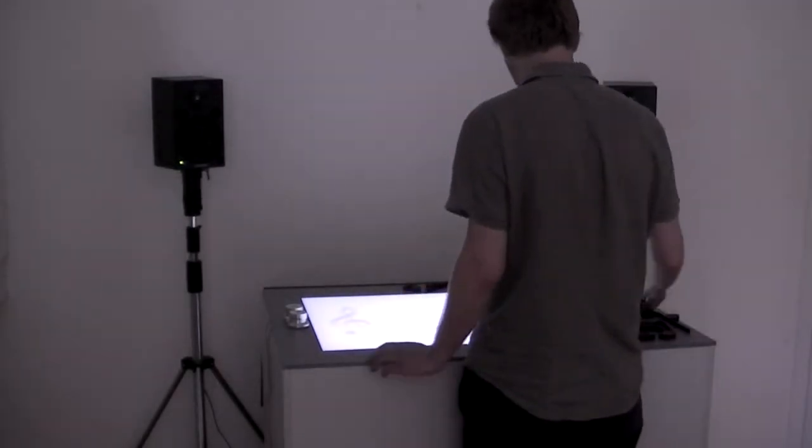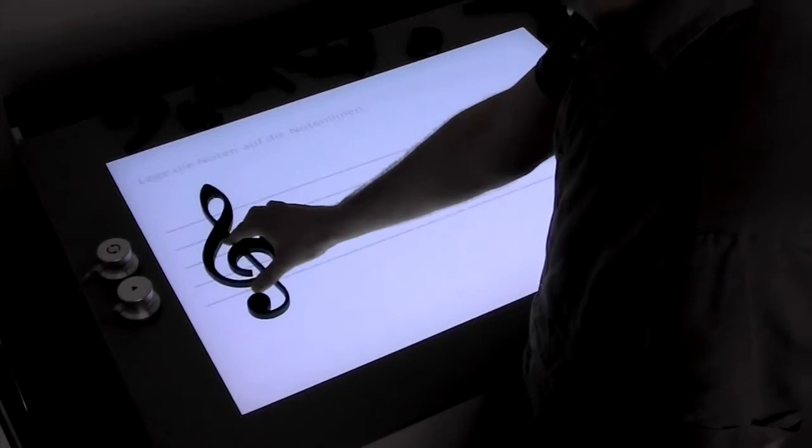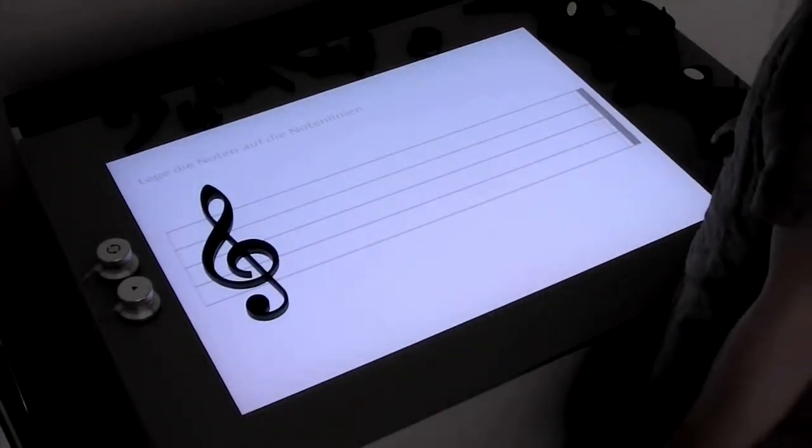To activate Noteput, simply put the treble clef on the table. As soon as you place a note on the staves, you can hear its respective sound.